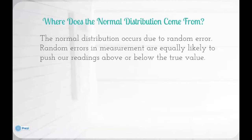The normal distribution occurs due to random error. Random errors in measurement are equally likely to push our readings above or below the true value.